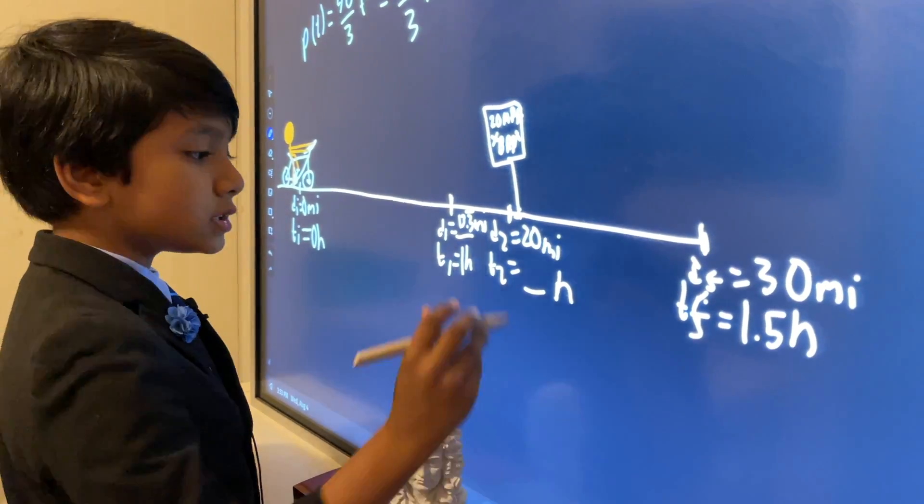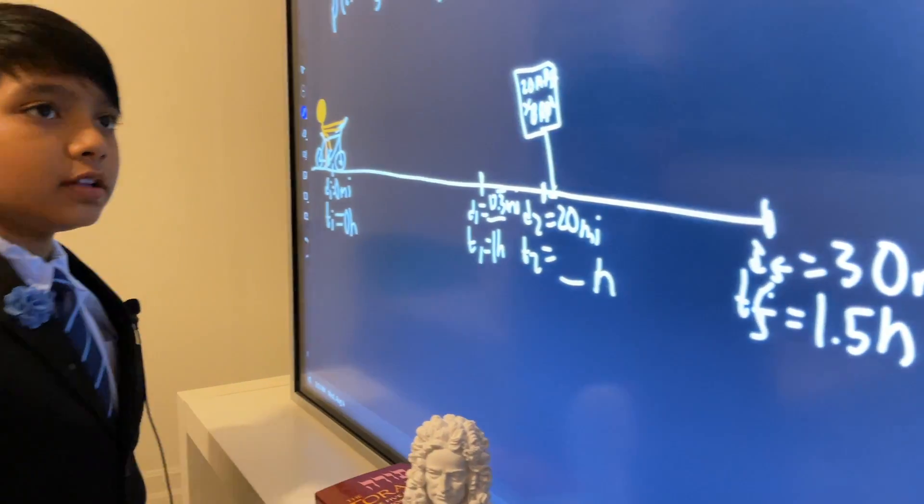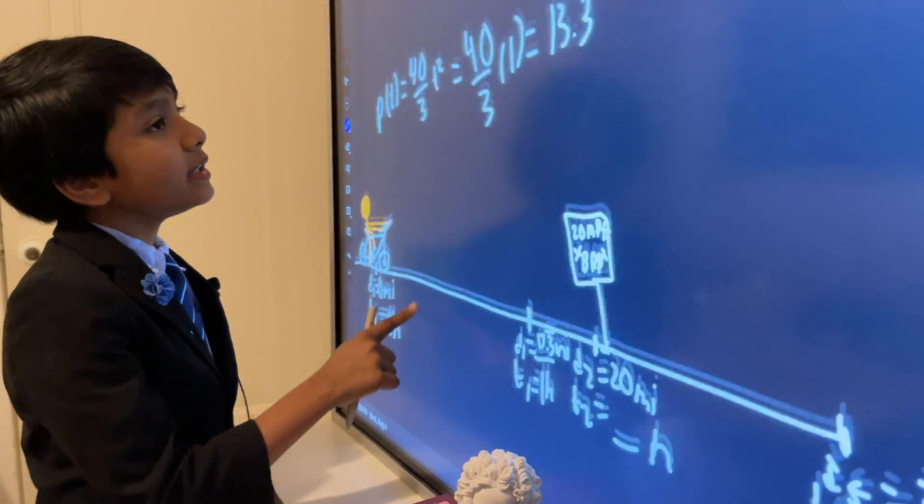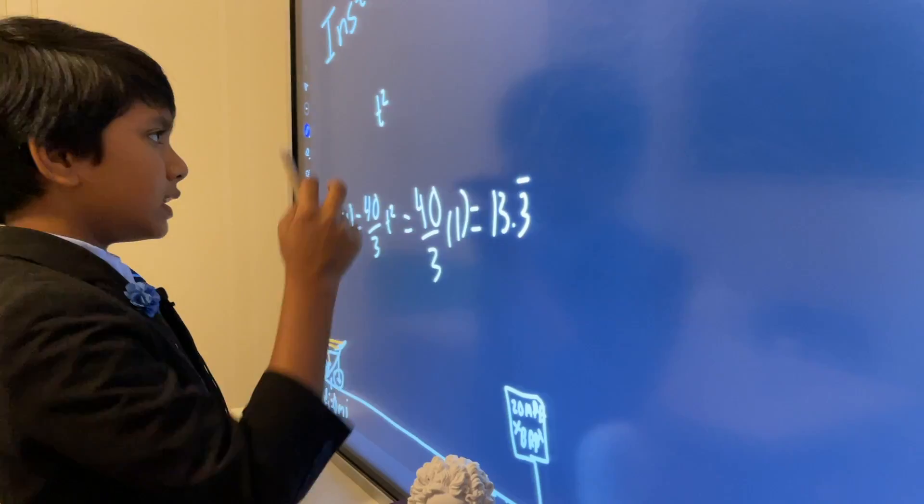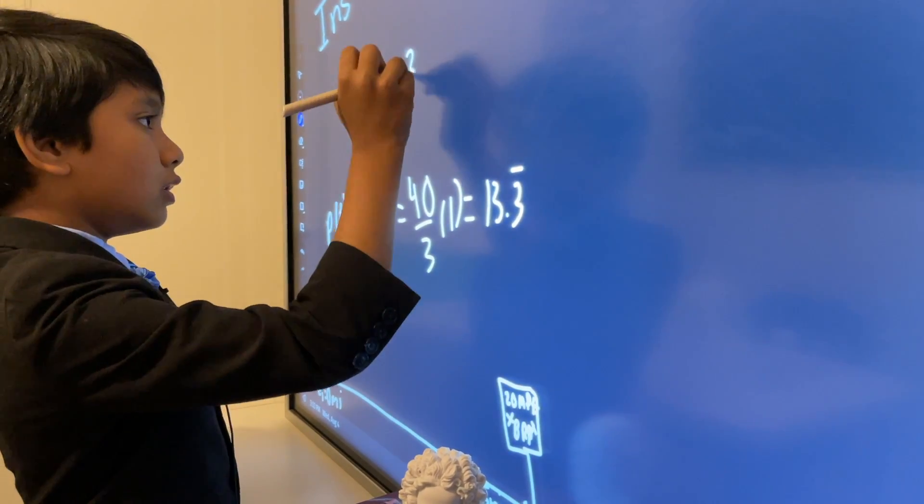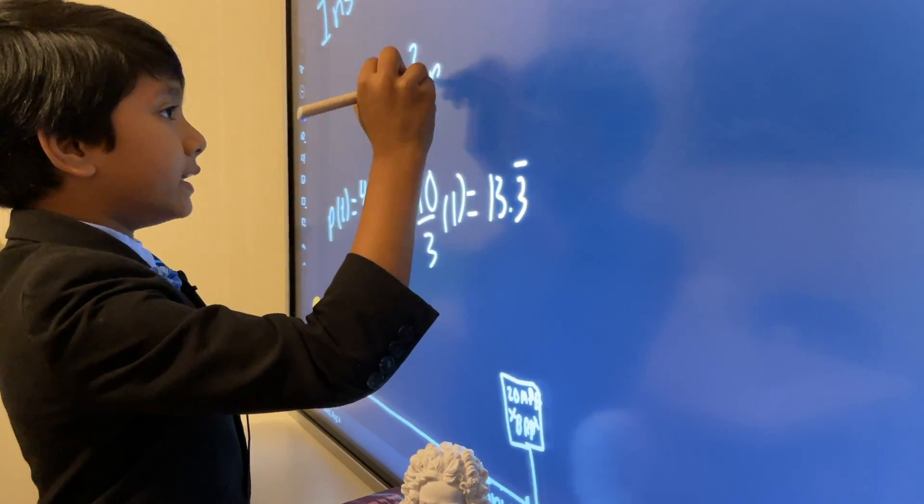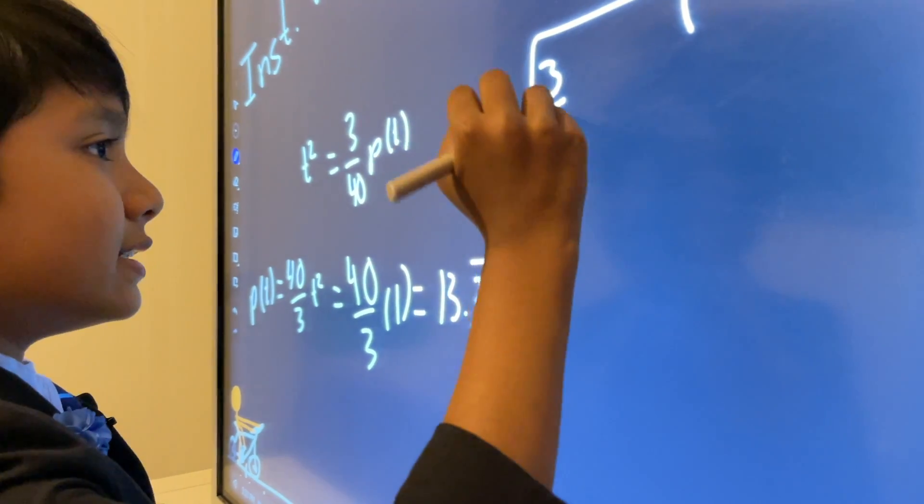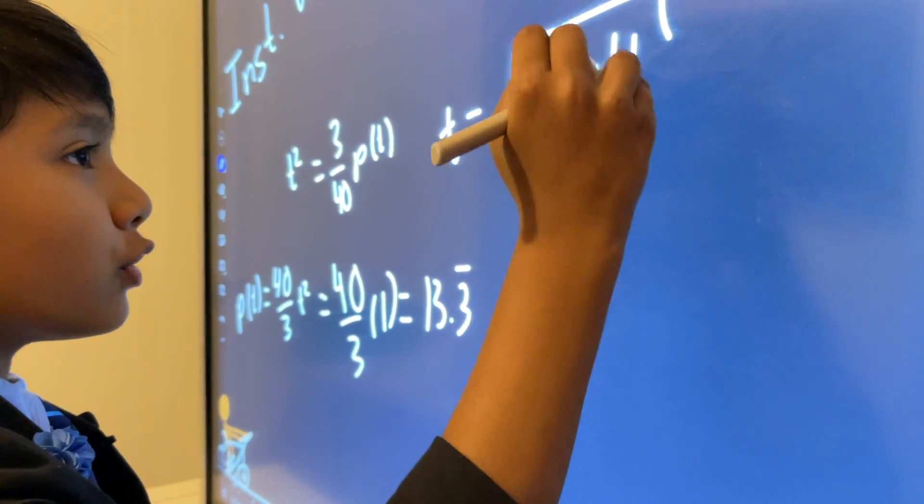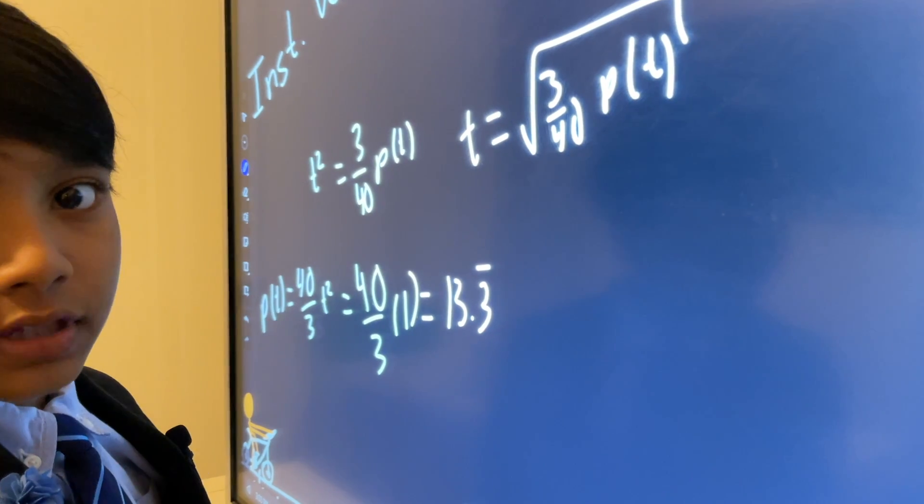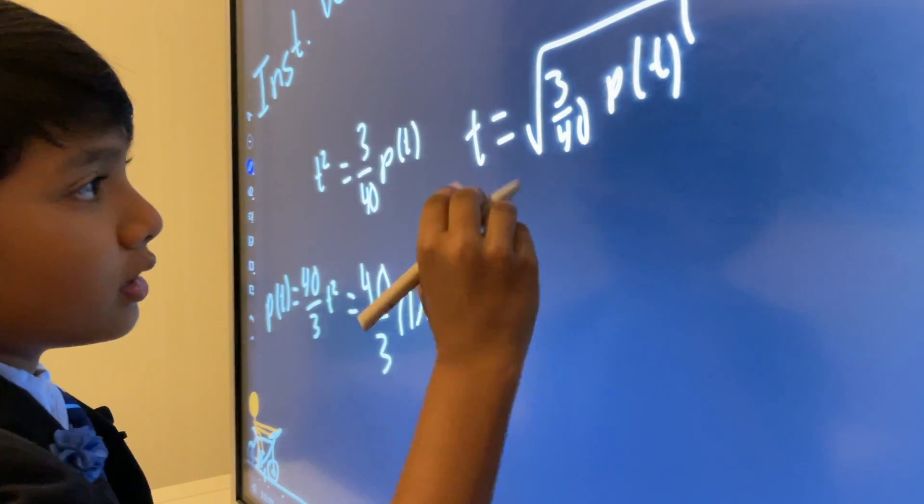And so, now, let's look at the second one, T2. So, T2 is going to be T squared equals 3 over 40 P of T. And that gives you somewhat of a predicament over here. But don't worry, we haven't gone off the track.